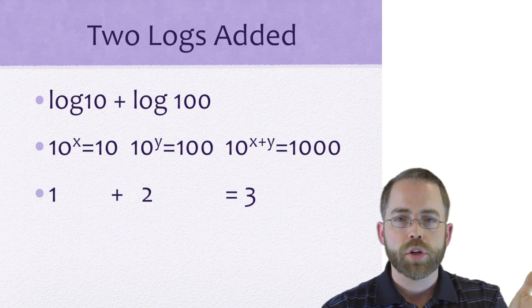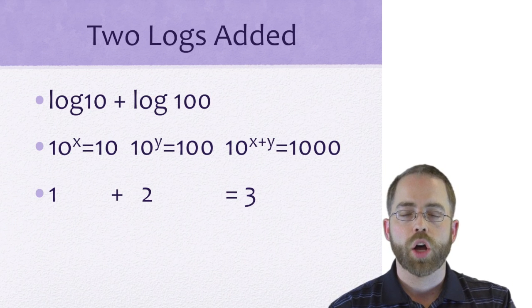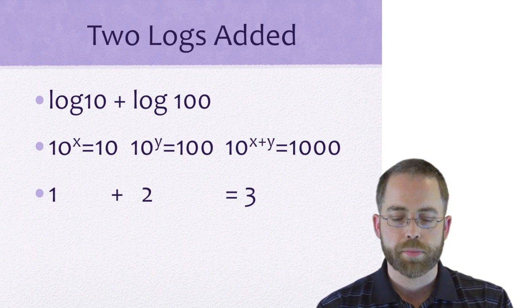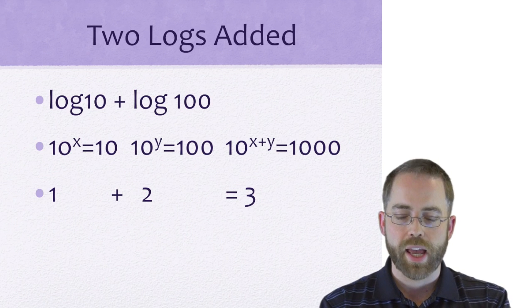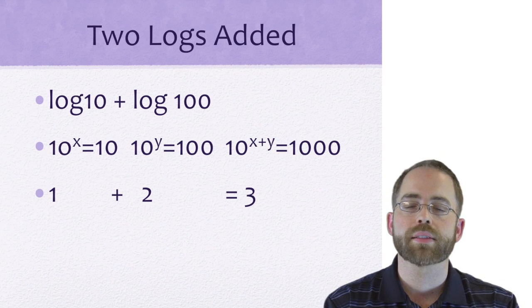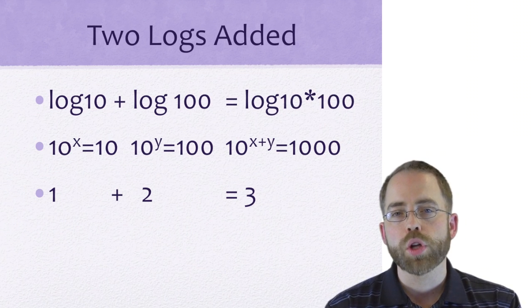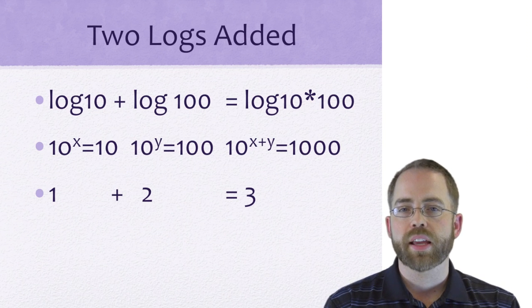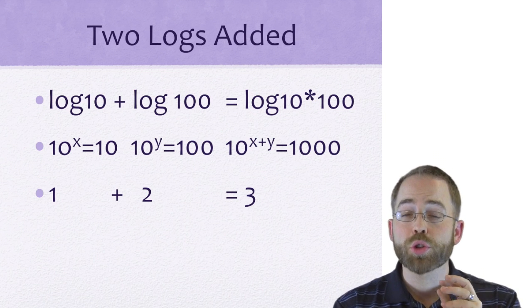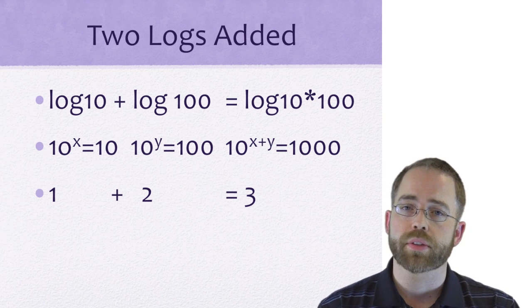We could have just said: what is the one exponent that I put on 10 to get a thousand? A hundred times 10 is a thousand, and 10 to the x times 10 to the y is 10 to the x plus y, which means that if you have two logs being added, that's the same as one log being multiplied.